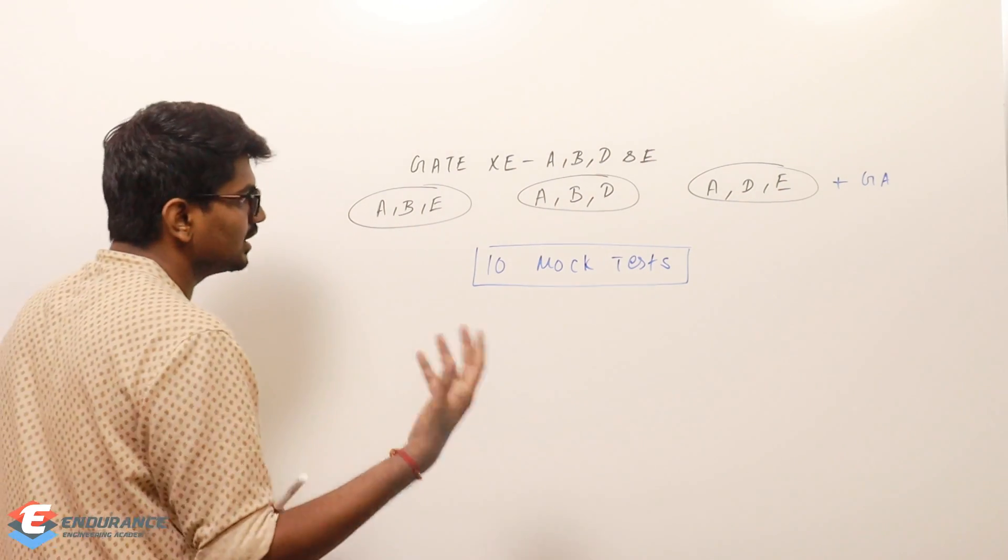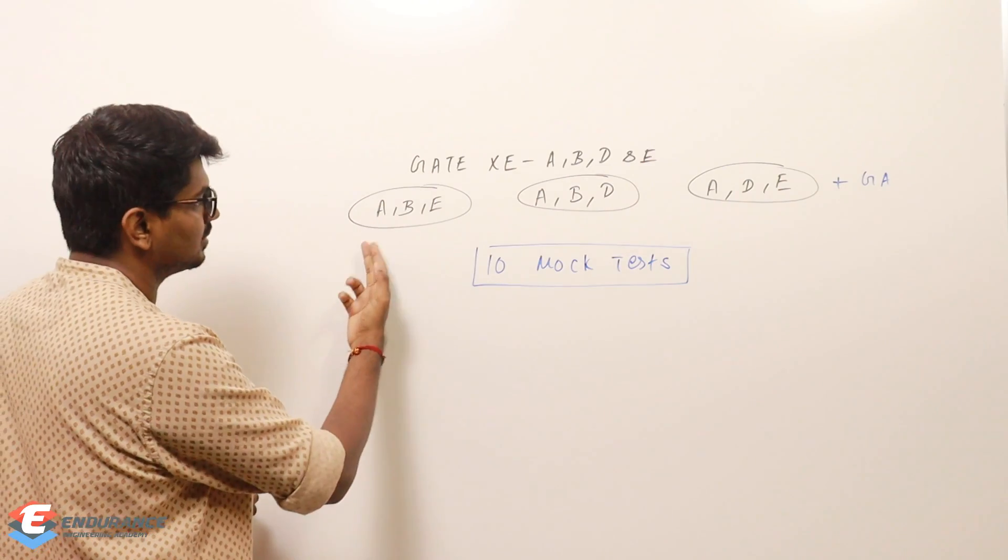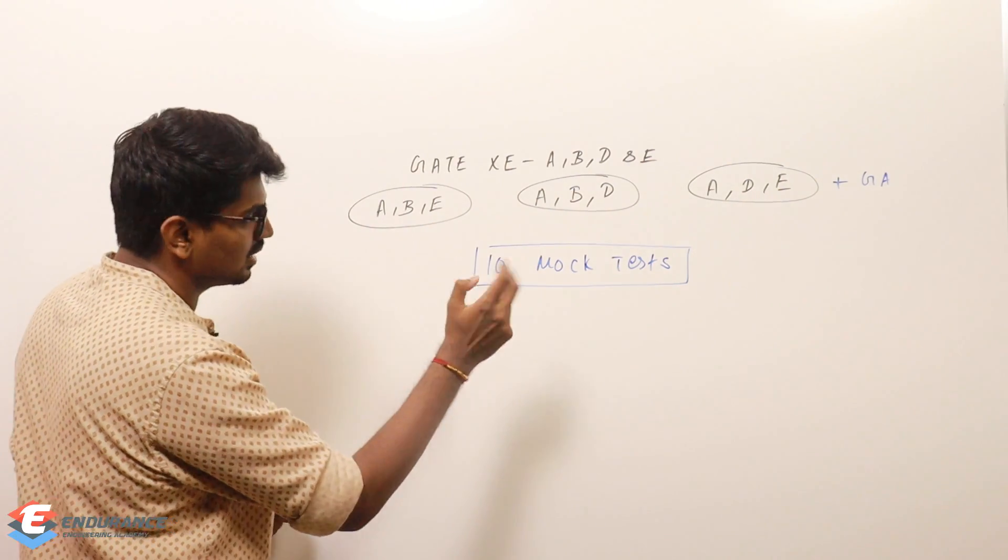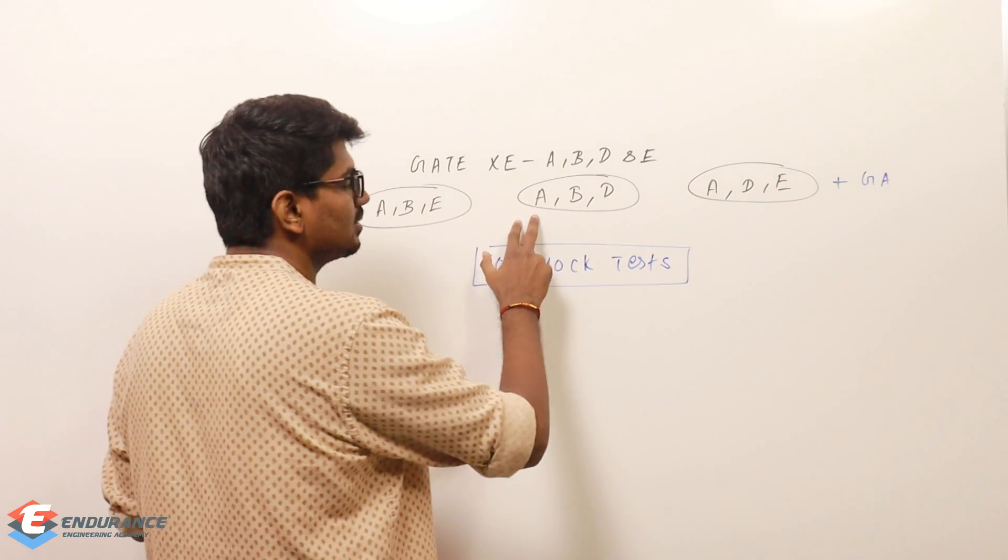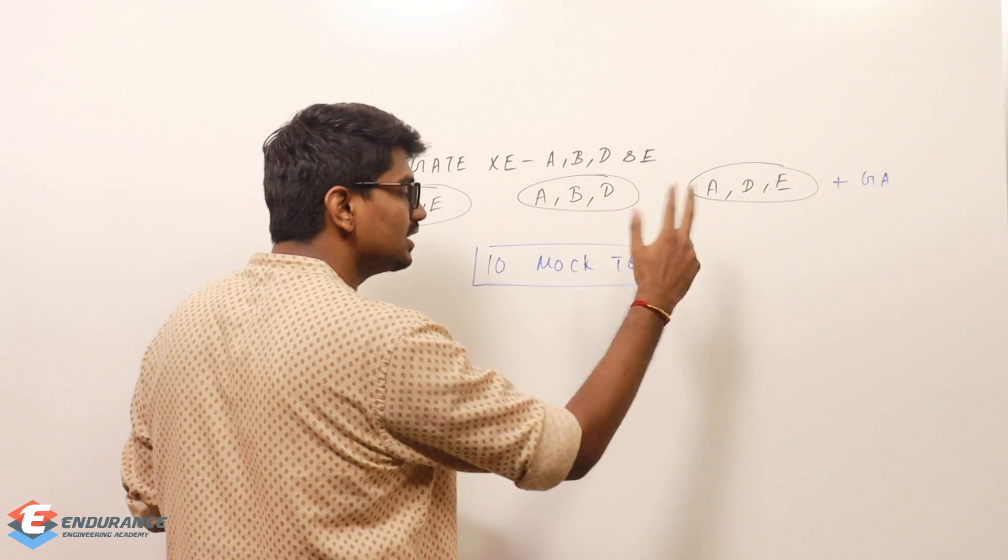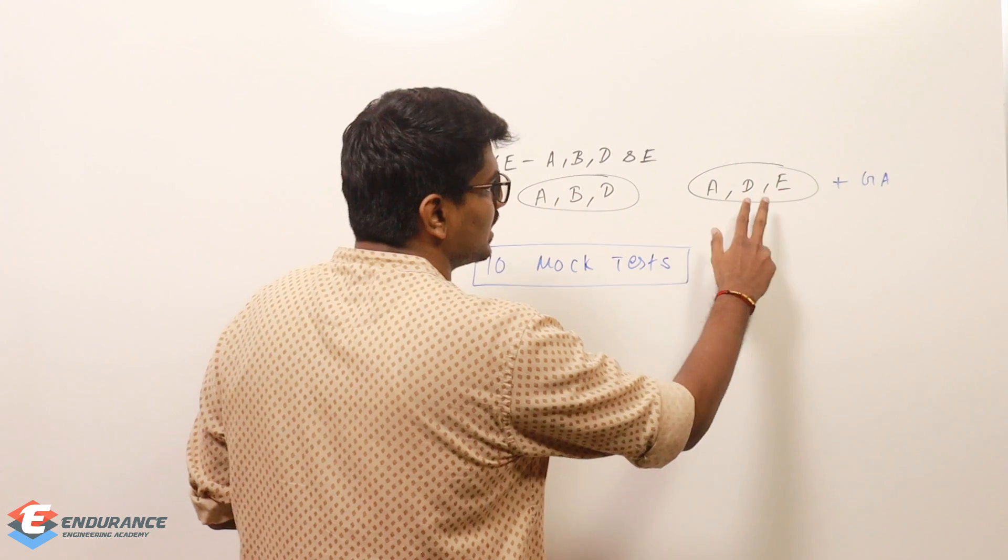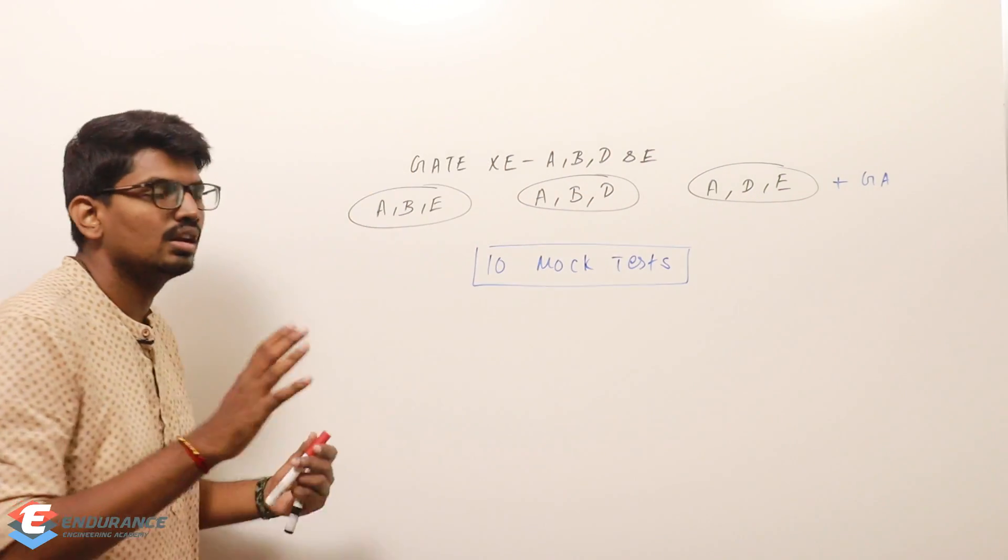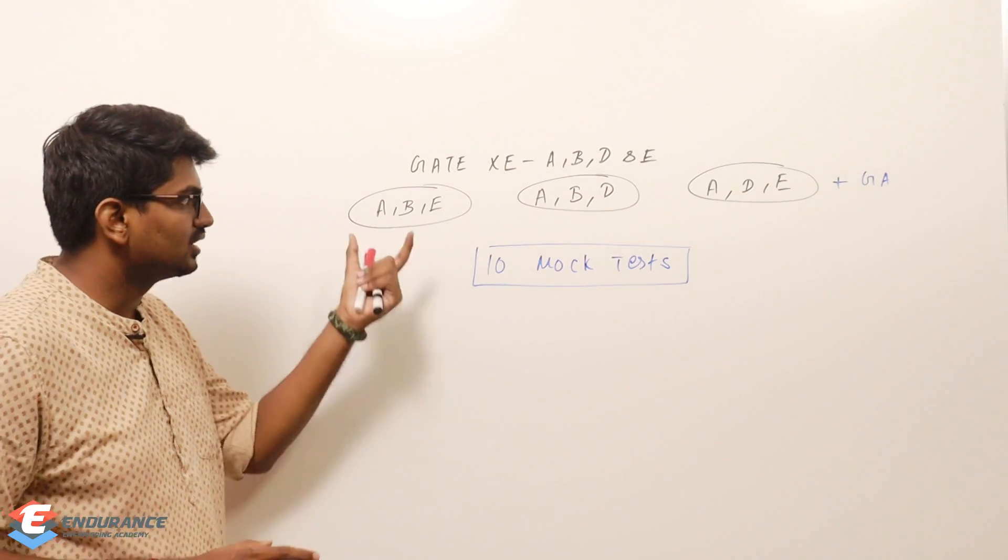Whichever combination you want - mathematics is compulsory. You can write A, B, E which means mathematics, fluid mechanics, and thermodynamics; or A, B, D - mathematics, fluid mechanics, and solid mechanics; or mathematics, solid mechanics, and thermodynamics. Any combination you want, you can avail the test series.